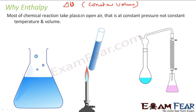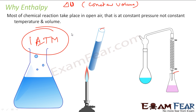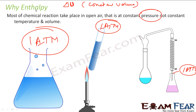Most of the chemical reactions which we see take place in open air — for example, you heat something and the burn is in open air. When we talk about open air, we have constant one atmospheric pressure everywhere. So the pressure is constant, but temperature and volume are not constant.